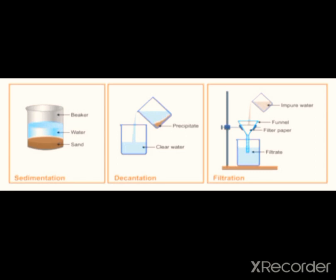The first method we will deal with is sedimentation and decantation. The word 'sediment' means the settling down of suspended, insoluble, or heavy particles in a solid-liquid mixture. In the figure shown, there is a mixture of sand and water. Water is liquid and sand is solid. The solid that settles at the bottom is known as sediment — here, sand is the sediment. The clear liquid above the sediment is called the supernatant liquid, which is water.